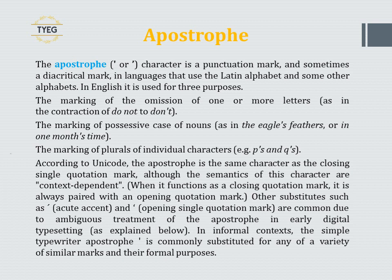According to Unicode, the apostrophe is the same character as the closing single quotation mark, although the semantics of this character are context-dependent. When it functions as a closing quotation mark, it is always paired with an opening quotation mark. Other substitutes such as the acute accent and the opening single quotation mark are common due to ambiguous treatment of the apostrophe in early digital typesetting. In informal contexts, the simple typewriter apostrophe is commonly substituted for any of a variety of similar marks and their formal purposes.